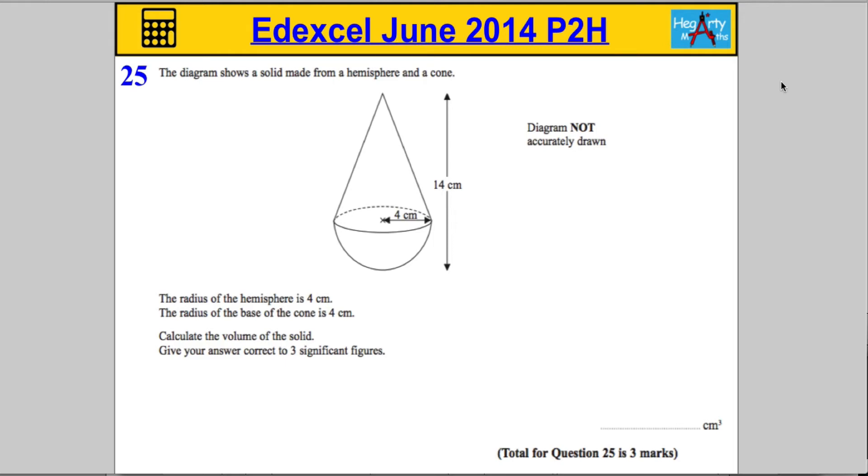Okay, so we're getting to the business end of the paper now. Questions are getting quite difficult. Let's take a look at this one. It tells us that the diagram shows a solid made from a hemisphere and a cone. It says the radius of the hemisphere is 4, as shown. The radius of the base of the cone is 4, again as shown. We're asked for the volume of the solid, correct to three significant figures.